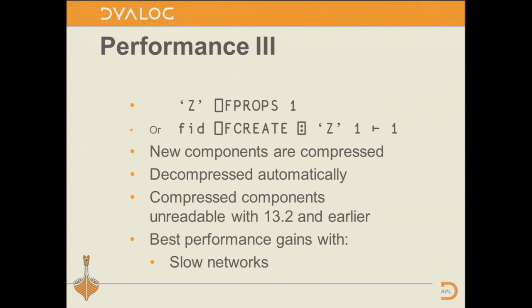Compression is straightforward to use. There's a new property on the file — 'Z' for zip — which you can set using quad F props or when you create a file. When set, all components are automatically compressed on write and automatically decompressed on read, so there's nothing you need to do apart from setting the property. The only disadvantage is that 13.2 and earlier will not be able to read these compressed components. This really gives performance benefits on slow networks where the cost of transferring data is high.